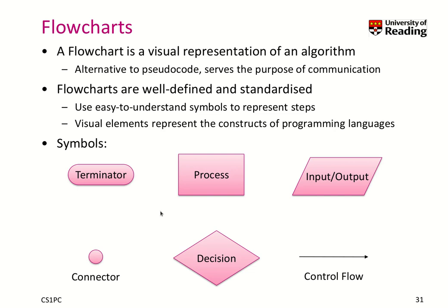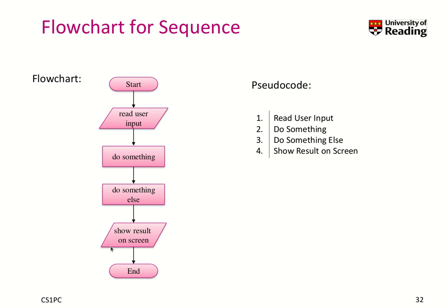Another way of describing an algorithm is a graphical representation. Flowcharts are a visual representation of an algorithm — an alternative to pseudocode that serves the purpose of communication. They are well-defined and standardized, using easy-to-understand symbols to represent the steps. The symbols include arrows defining control flow, processes, input/output shapes, a decision-making construct for selection, and start/end terminators.